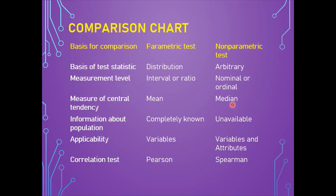In the parametric test there is complete information about the population; conversely, in the non-parametric test there is no information about the population. The parametric test applies to variables only, whereas non-parametric tests apply to both variables and attributes. For measuring association between two quantitative variables, Pearson's correlation coefficient is used in parametric tests, while Spearman's rank correlation is used in non-parametric tests.